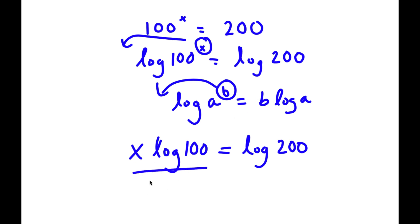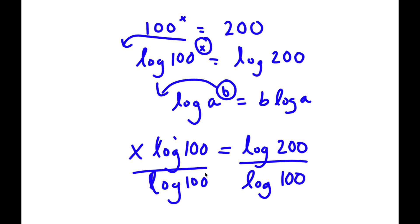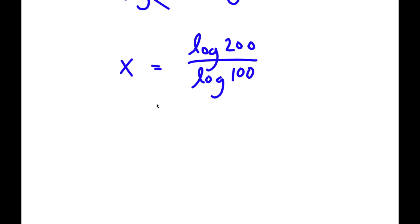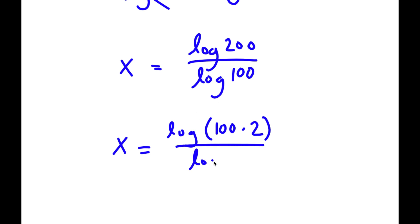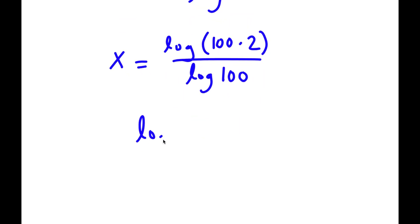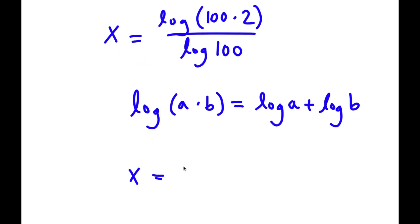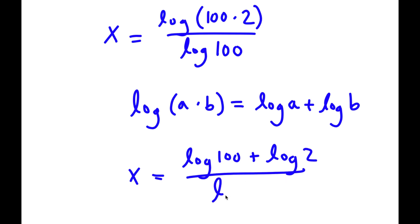Now if I divide both sides by log 100, these two cancel out and I have x equals log 200 over log 100. I can rewrite log 200 as log of 100 times 2, and using the rule log of a times b equals log a plus log b, I can write this as log 100 plus log 2, all over log 100.